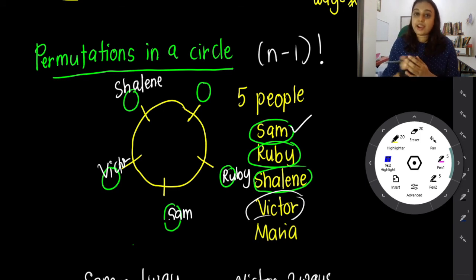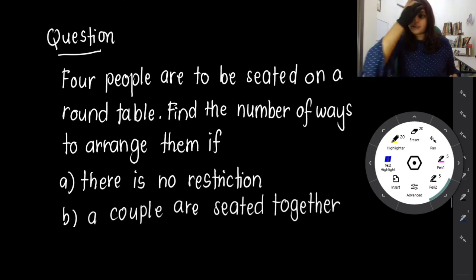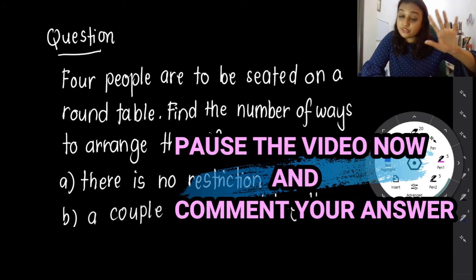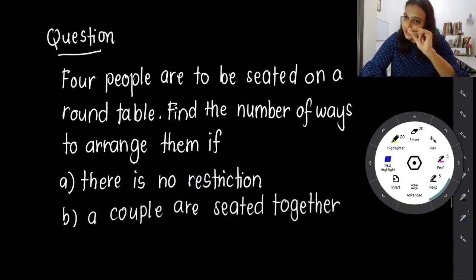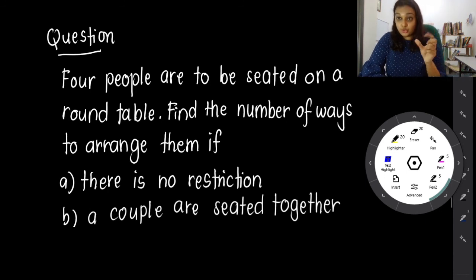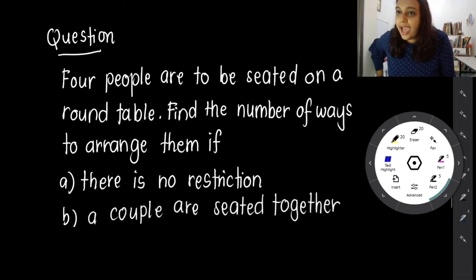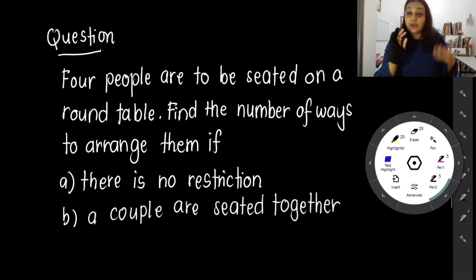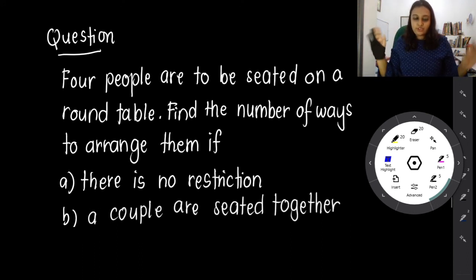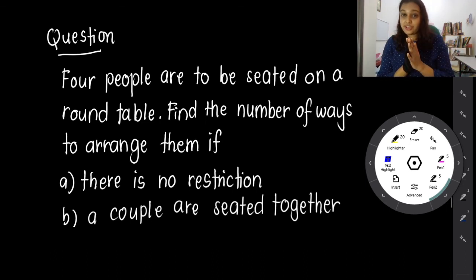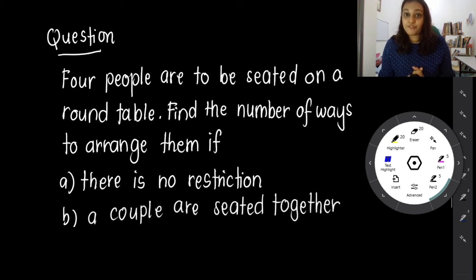Here's a practice question - write your answer in the comments below. Part A: Four people are to be seated at a round table. Find the number of ways to arrange them if there is no restriction. Part B: Find the number of ways to arrange them if the couples are seated together. Hint for Part B: think of the couple as a unit. If you get the answer, comment below and I'll reply. Thank you for watching - subscribe, like, and share if you find this beneficial. See you next time for Part 4!